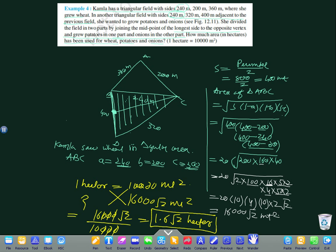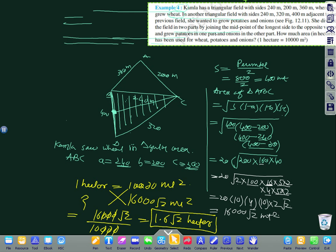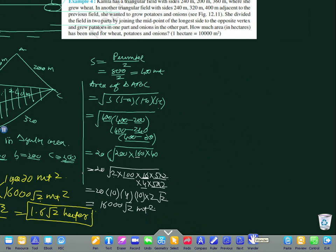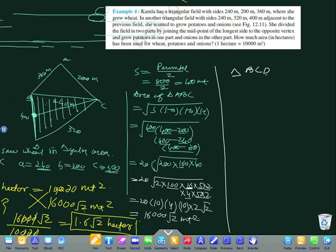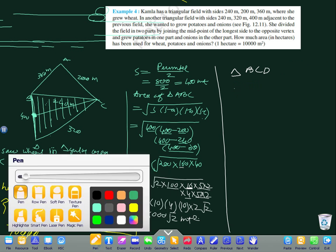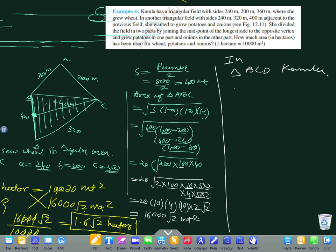Next part. Now triangle BCD, where Kamla will sow potato and onion. For area, we need s. S equals 240 plus 400 plus 320 divided by 2.